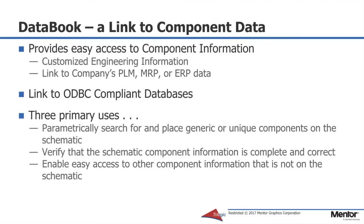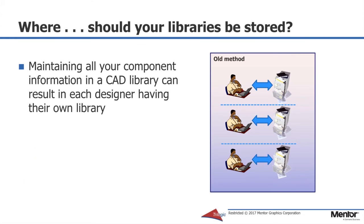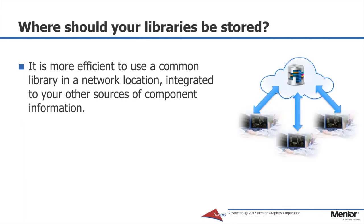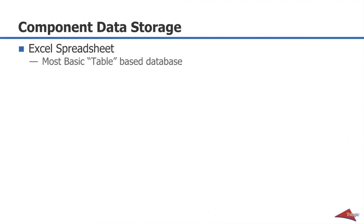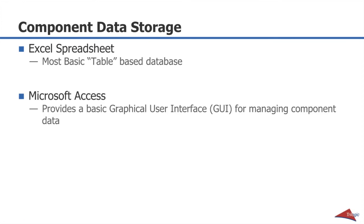Some people ask where your libraries should be stored. It is interesting how many companies have each engineer maintaining their own library. We recommend the use of a common library, both for the CAD information and the component information. If you have multiple sites that are not easily networked, you can have a master library that can be mirrored to other locations. Because it links to an ODBC-compliant database, it can be as simple as an Excel spreadsheet. Excel spreadsheets can be used as a basic table-based database. Microsoft Access is also a database utility — it provides a basic graphical user interface for managing component information, but it's very generic.